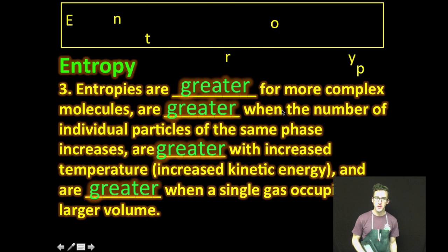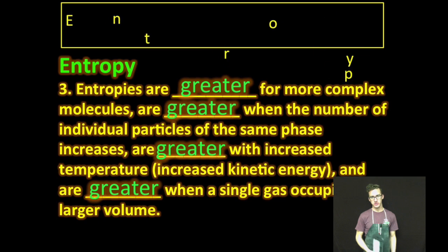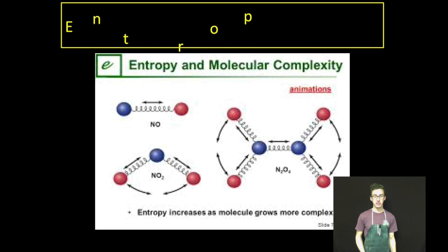It's also important to note that entropies are greater for more complex molecules. So, for example, if I had a molecule of NO compared to a molecule of NO2 compared to a molecule of N2O4, the entropy increases as we go from NO to NO2 to N2O4 because we have a greater number of electrons that exist in those more complex molecules and the types of vibrational and rotational motion that can occur within the bonds.